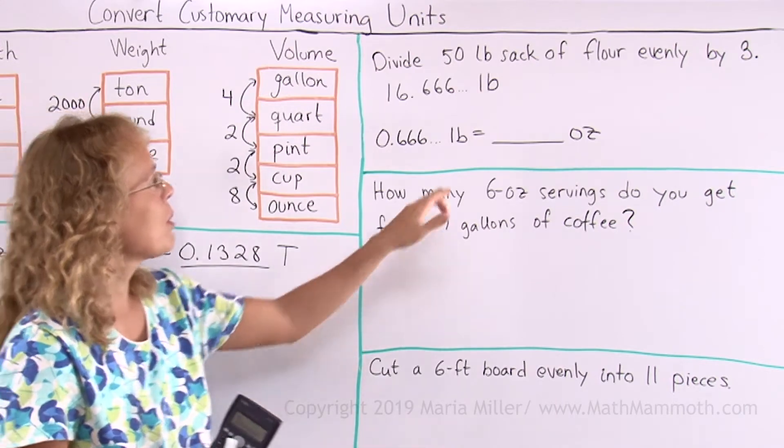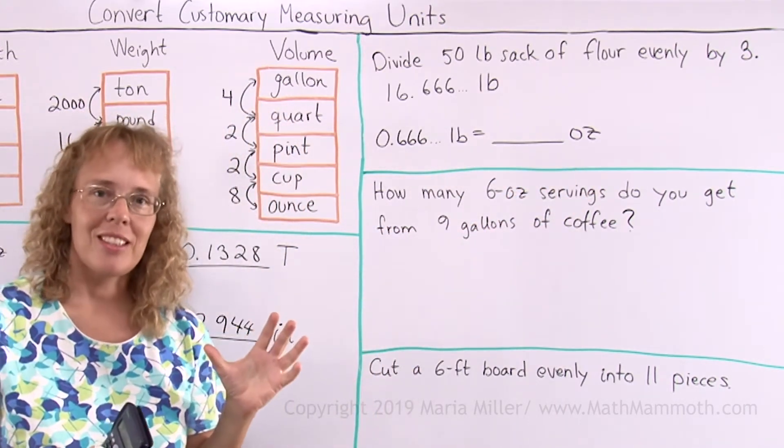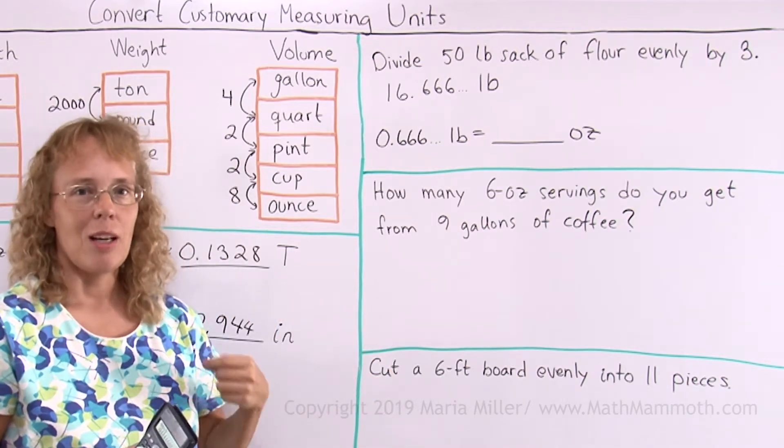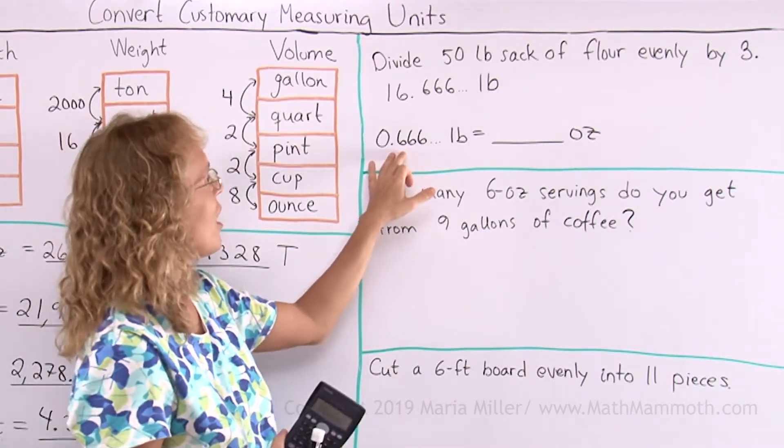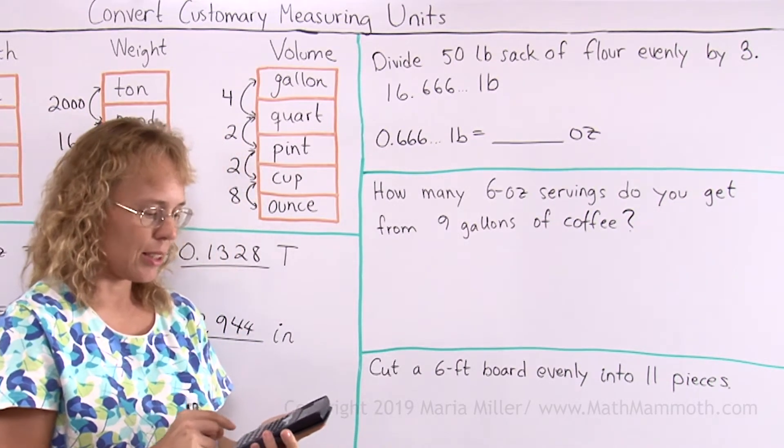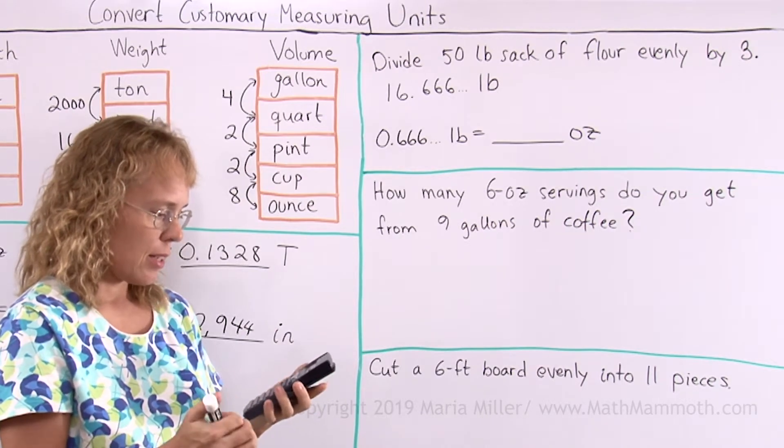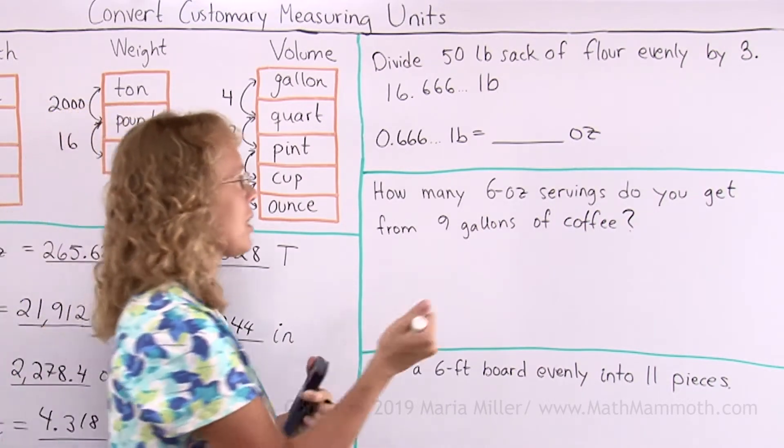Okay, so this is just a conversion between pounds and ounces. Ounces are the smaller units. I need more of them. I will multiply this number times 16. So 0.66666, put lots of sixes in your calculator, times 16 and you will get 10.66666.